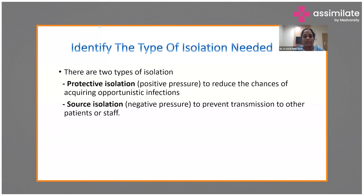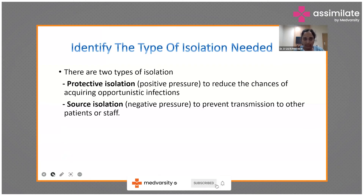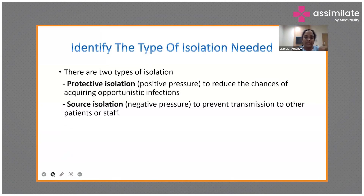Negative pressure isolation is required for tuberculosis patients, COVID patients, and H1N1 patients, where airborne infection or small droplets can spread to staff and medical personnel. To summarize: protective (positive pressure) isolation keeps the patient from getting infected from outside; negative pressure isolation prevents the patient from infecting the staff.